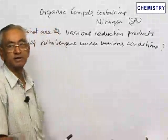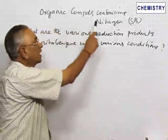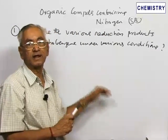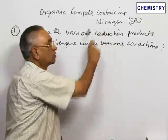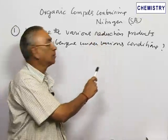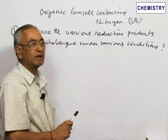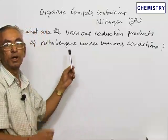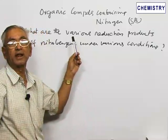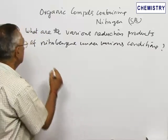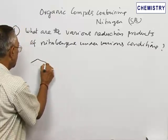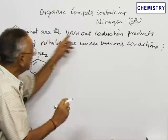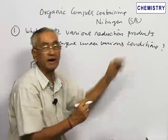Today we are going to discuss some details about organic compounds containing nitrogen. We will discuss it in the form of questions and answers. One important group of nitrogen compounds are amines, but equally important are some nitro compounds. Let us discuss the first question relating to an organic nitrogen compound containing a nitro group, namely nitrobenzene: what are the various reduction products of nitrobenzene under various reduction conditions?